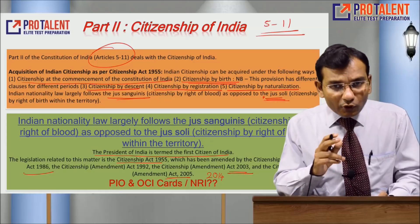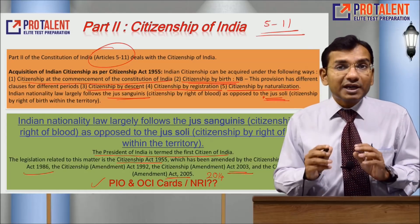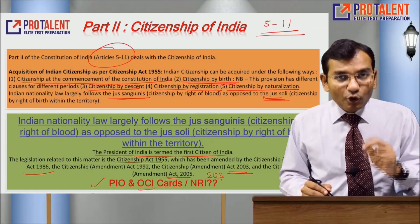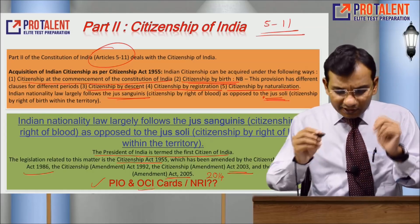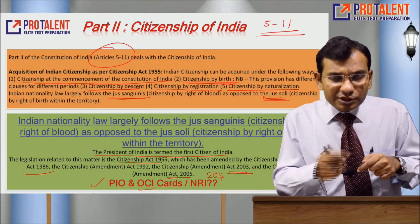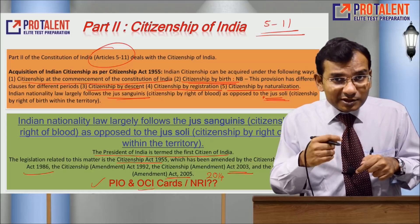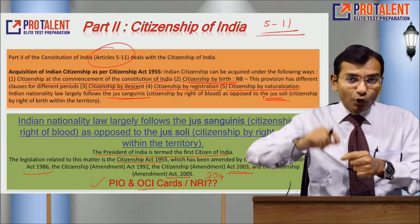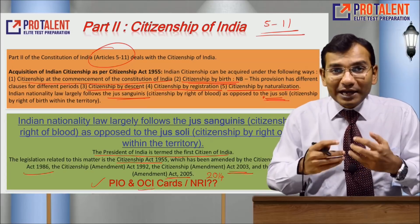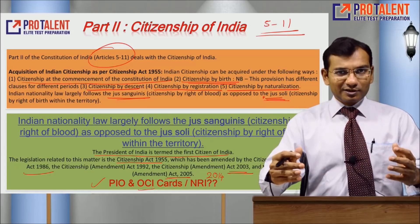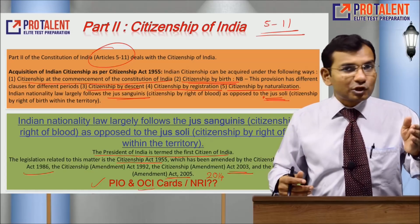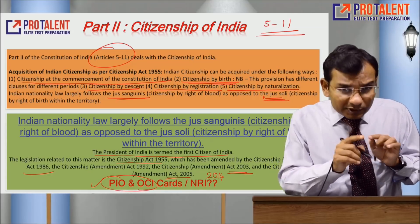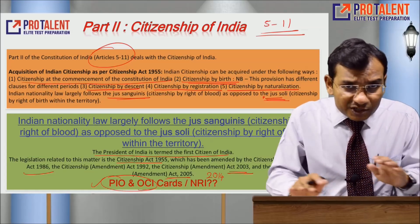A few more terms you should know: PIO means Person of Indian Origin — it is a card given to eligible individuals. OCI means Overseas Citizen of India. Since India follows jus sanguinis, we want to extend certain benefits of India to someone born outside India whose parents were Indian, even if they have not taken Indian citizenship — for this we provide PIO or OCI cards. Remember, these cards are connected with citizenship but they are not citizenship themselves.